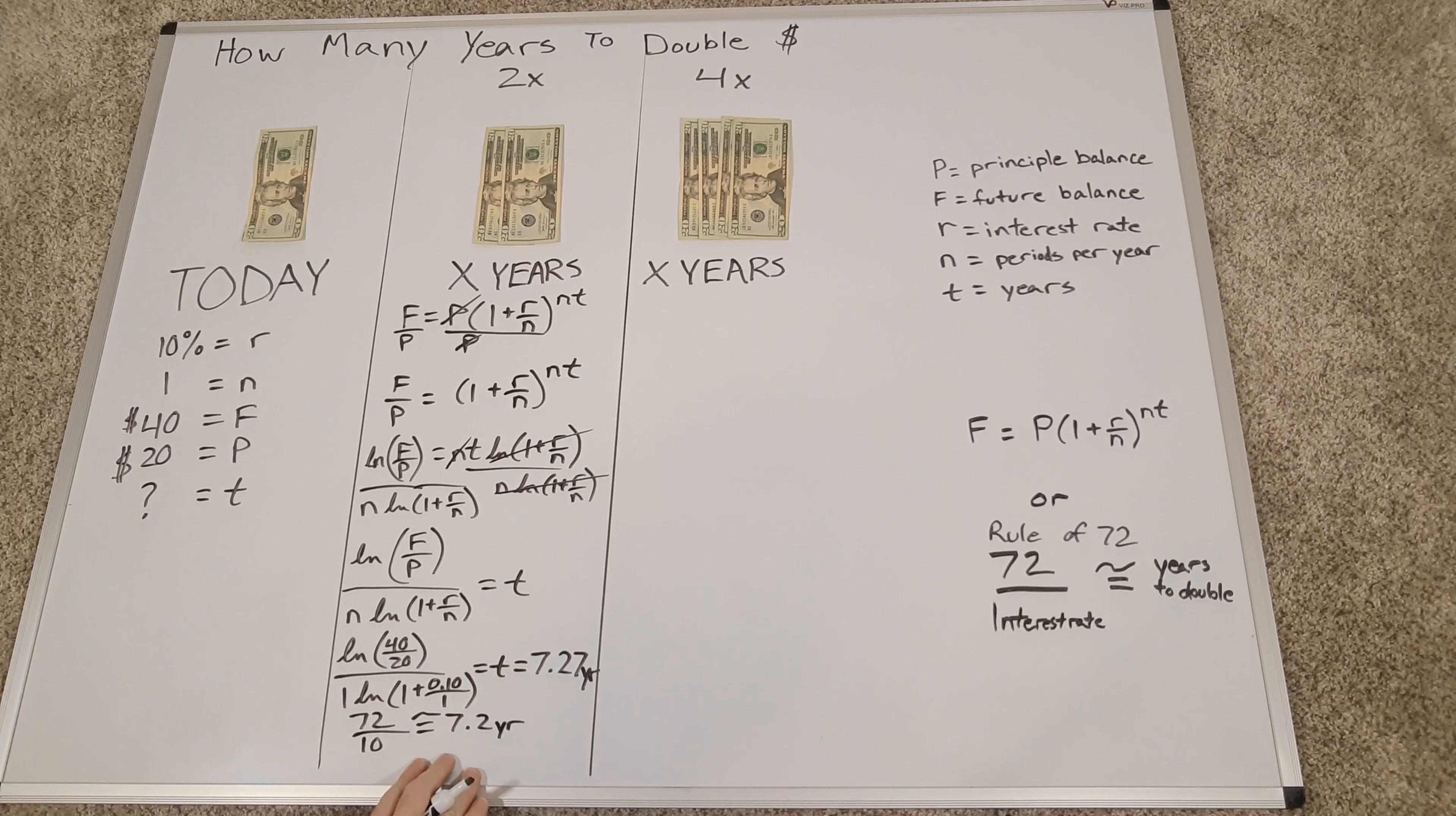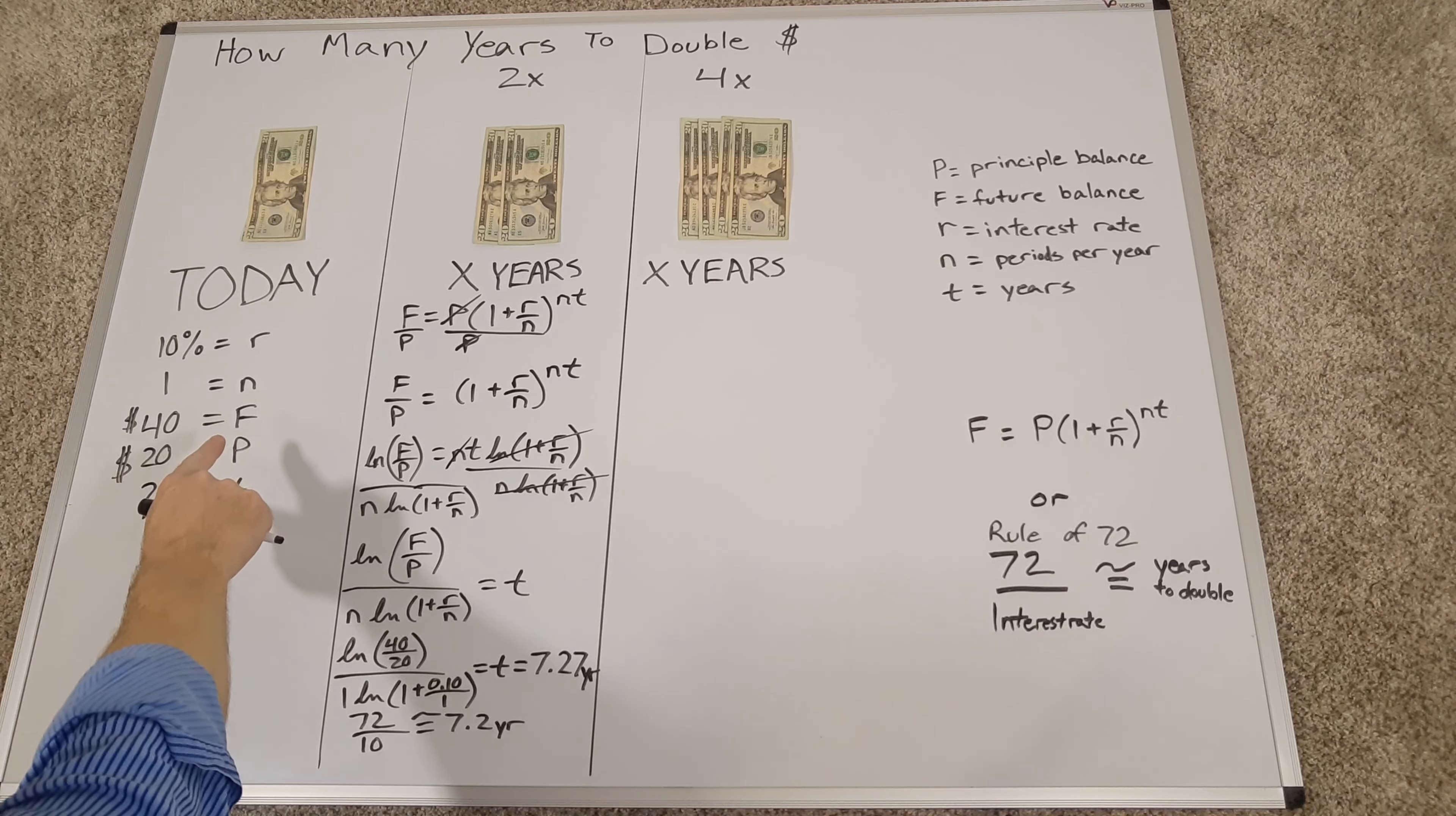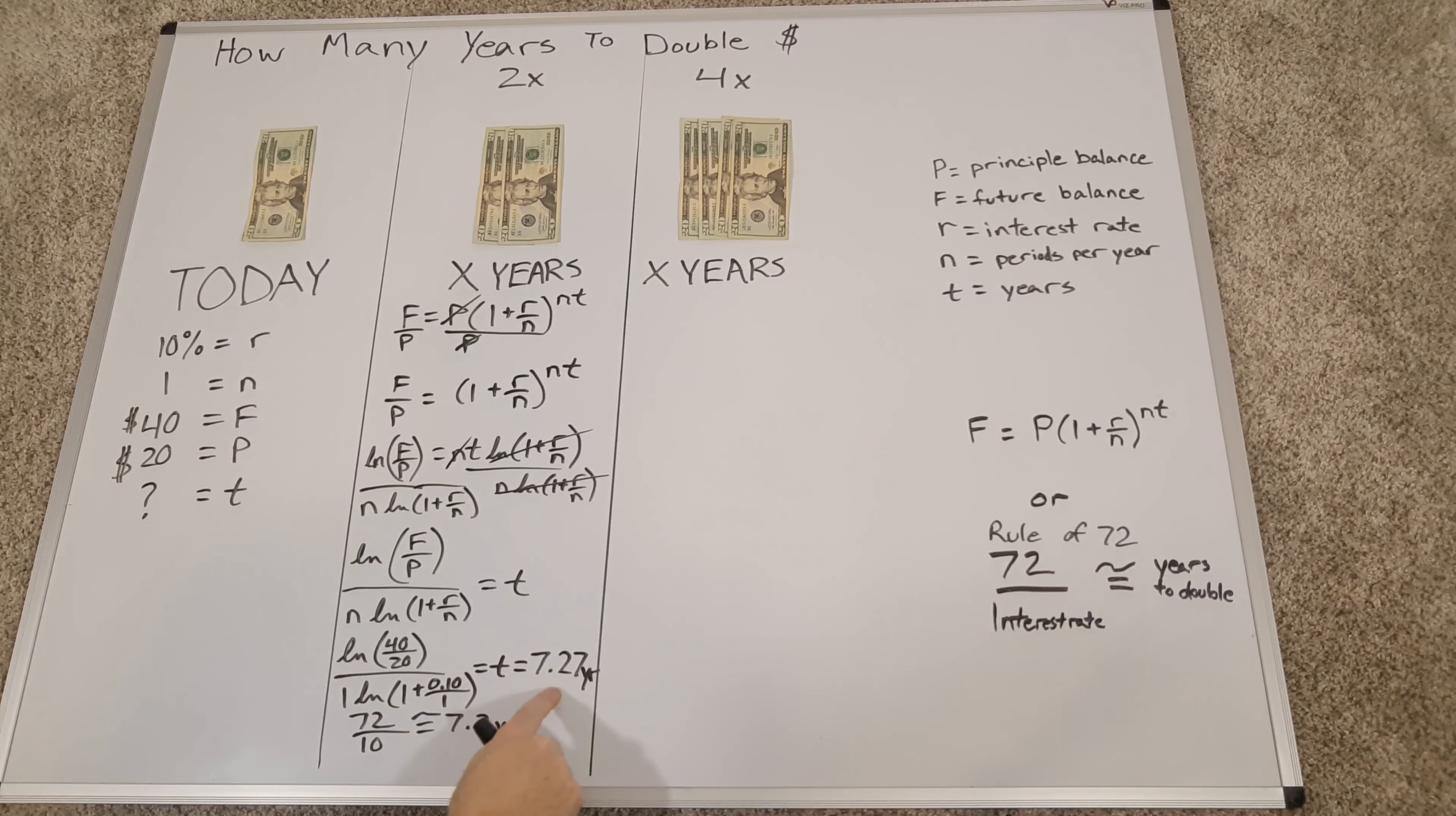So, if you really want to do math quick, it's a lot easier to take 72, divide by your interest rate, and get 7.2 years. 7.2 versus 7.27 years, to me that's very close. You're only off by a small percentage. So this is telling me whatever value I have today at a 10% interest rate, I will double it in about 7.27 years, and if I estimate it, it's about 7.2 years using the rule of 72, but this is the actual number. It'll take 7.27 years.